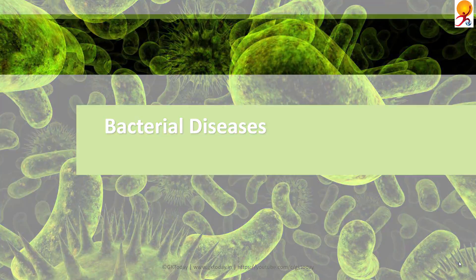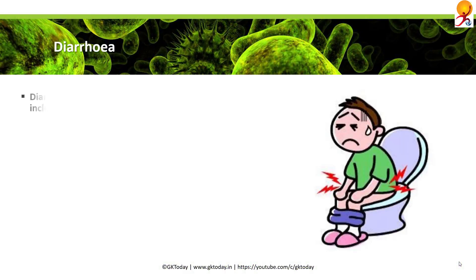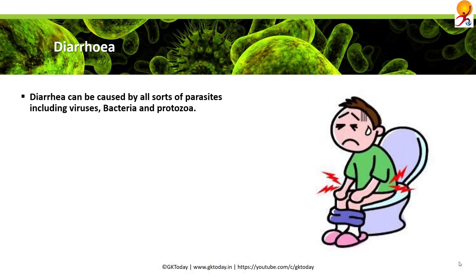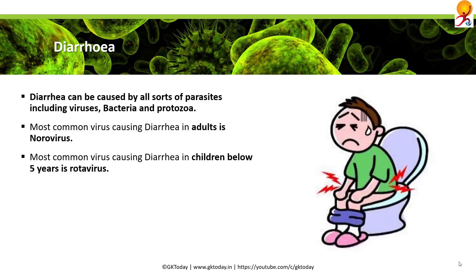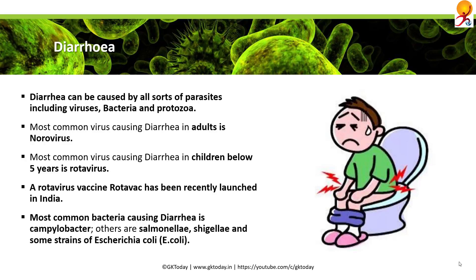Bacterial diseases: Diarrhea can be caused by all sorts of parasites including viruses, bacteria, and protozoa. In adults, norovirus is the major cause, whereas in children below five years it's rotavirus. A rotavirus vaccine, Rotavac, has been recently launched in India. The most common bacteria which causes diarrhea is Campylobacter; others are Salmonella, Shigella, and some strains of Escherichia coli.